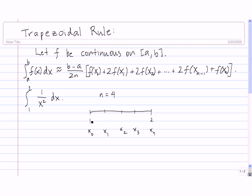If we're subdividing the interval from 1 to 2 into 4 equal pieces, we need to find our delta x. Delta x is going to be 2 minus 1 divided by 4, and so that's equal to 1 fourth.